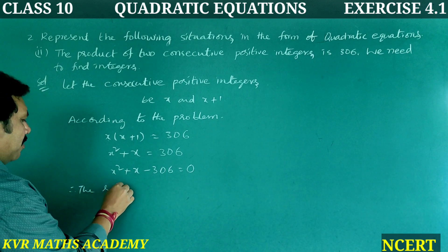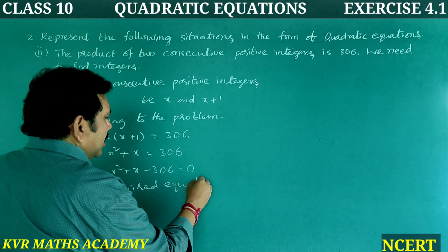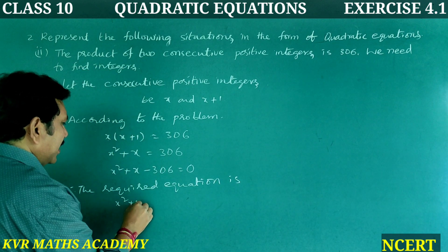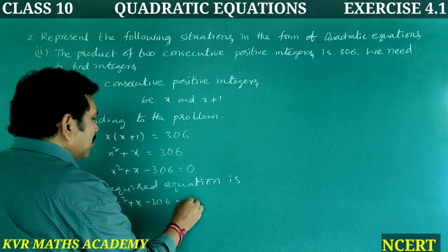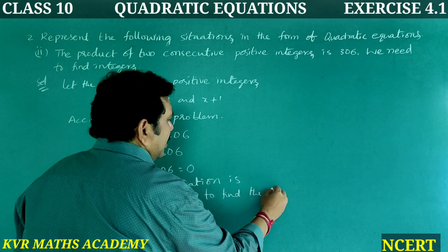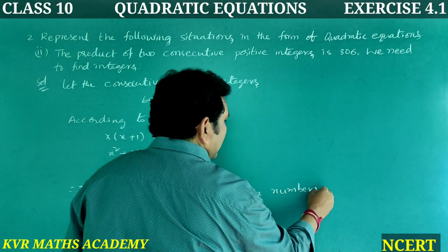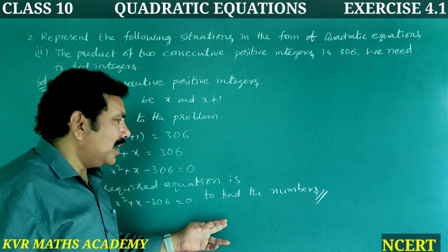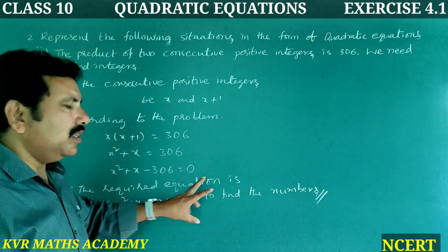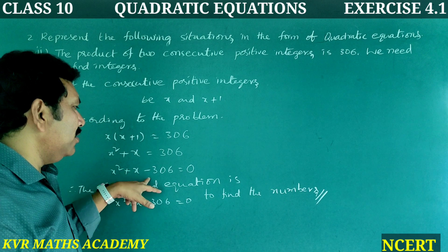Therefore the required equation is X² + X − 306 = 0 to find the two consecutive positive integers. To find X, we would solve this quadratic equation.